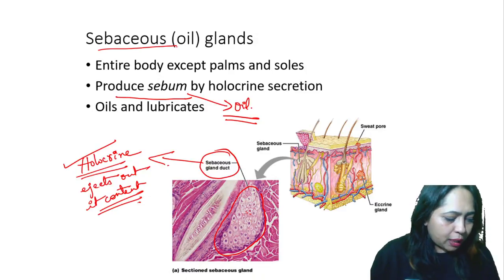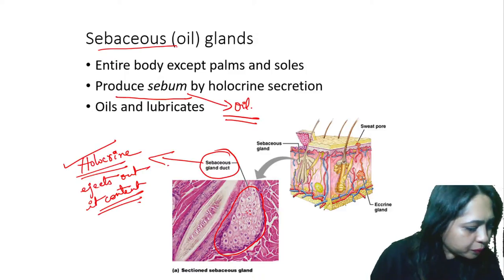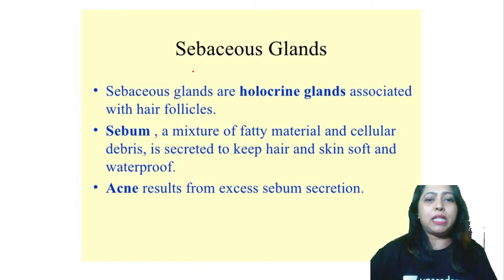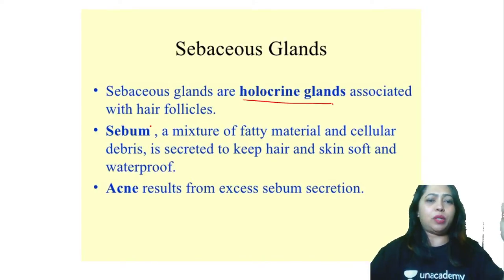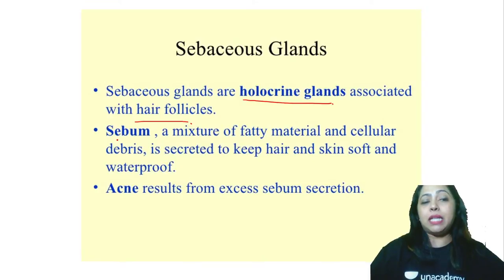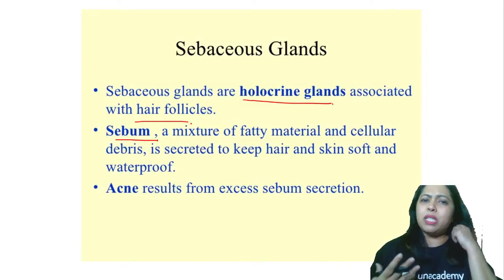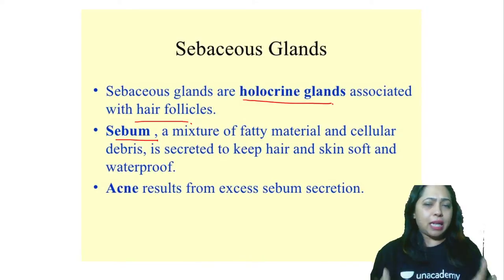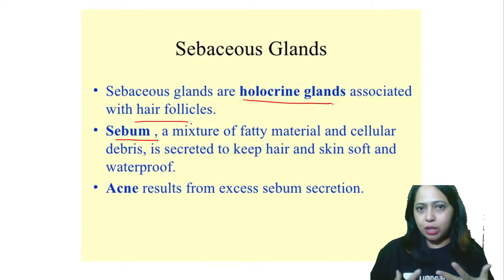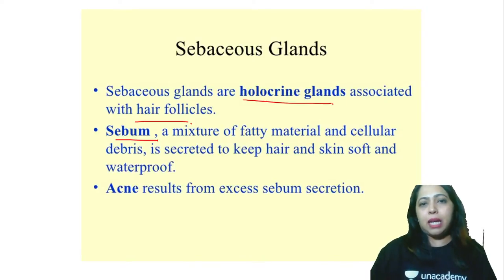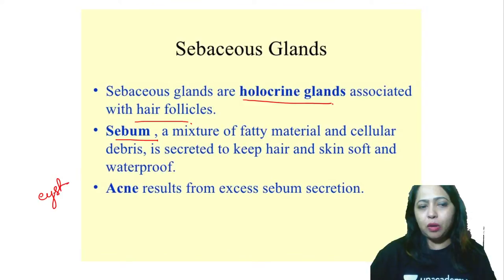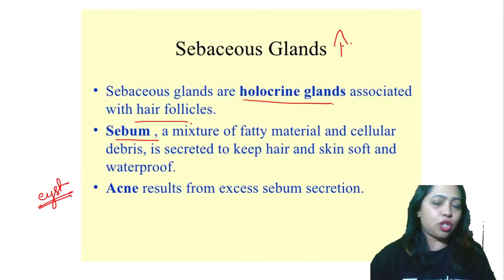Holocrine glands are always associated with hair follicles. Sebum is a mixture of fatty material and some debris. It keeps your skin and hair nourished and prevents drying. Excessive secretion of these sebaceous glands always results in acne production. Acne and sebaceous cysts can happen on the skin whenever there is increased secretion of oil.